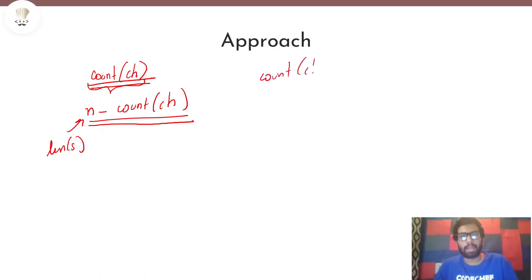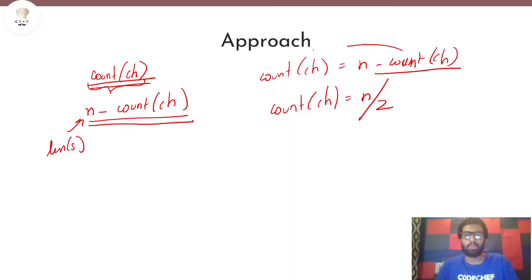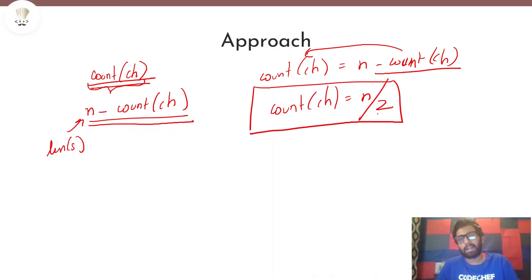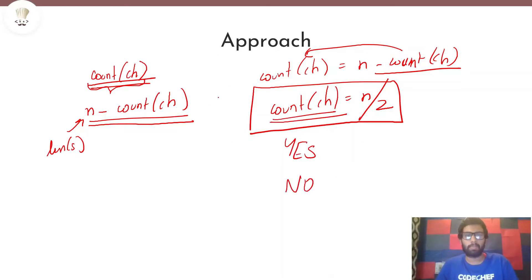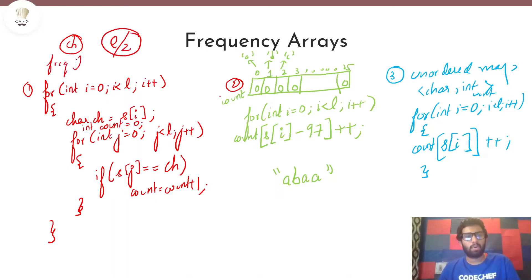In other words, count of the character should be equal to n minus count of ch. When is this satisfied? It is when count of ch equals n divided by 2. Because if you take count to the other side, you have 2 times count ch equal to n, so count ch is n by 2. If this criteria is satisfied we output yes; if not satisfied for any character, we output no. So we need to check which character has a frequency of n/2.